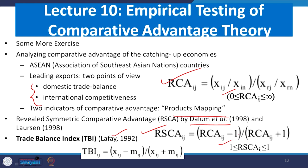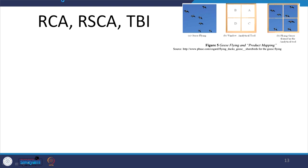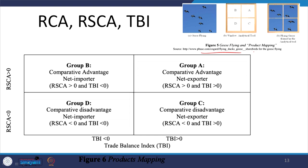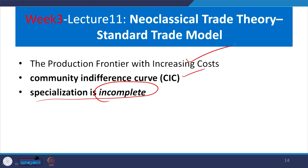After that we referred to an article published in a journal called the Flying Geese product mapping model, where we discussed TBI index, RSAI, and accordingly divided into 4 parts. In the context of neoclassical trade theory and standard trade model, we started in week number 3, where we talked about commodity indifference curves. From there we said that specialization is incomplete because of realistic assumptions and since the principle is based on an increasing cost function.